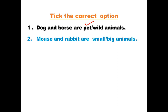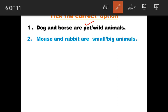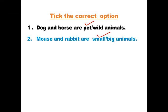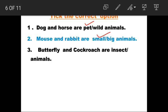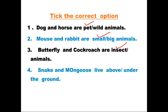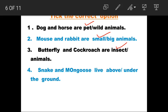Second: Mouse and rabbit are small animals or big animals? Yes, very good — these are small animals. Next: Butterfly and cockroach are insects or animals? Yes, these are insects. Next: Snake and mongoose live above or under the ground? Yes, these live under the ground, so we tick under.